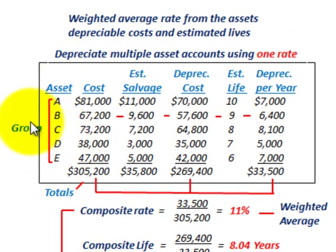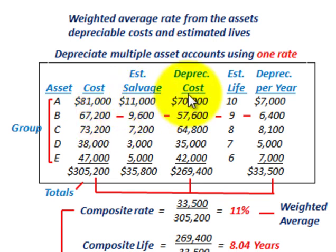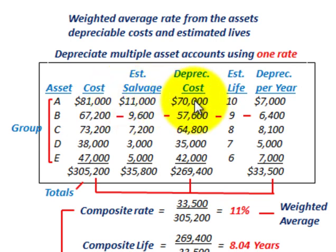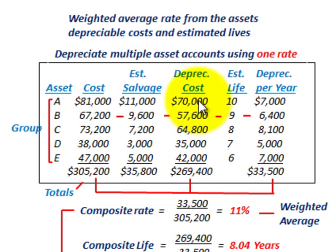To set this up, we have a group of assets — in this case assets A through E, so five assets in our group. We determine their original cost, estimated salvage value, depreciable cost, estimated life, and depreciation per year. For asset A, the depreciable cost of $70,000 is the original cost of $81,000 less its estimated salvage value. The depreciation per year of $7,000 is the depreciable cost of $70,000 divided by its estimated life of 10 years.